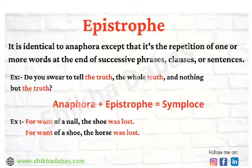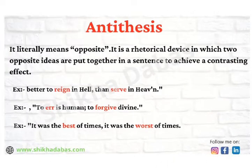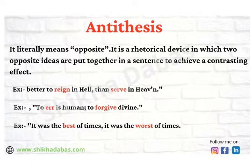The next literary device is antithesis. It literally means 'opposite.' It is a rhetorical device in which two opposite ideas are put together in a sentence to achieve a contrasting effect. The best example is from Milton's Paradise Lost: 'It is better to reign in Hell than to serve in Heaven.' The words 'reign' and 'serve' are two opposite ideas placed together in one sentence.